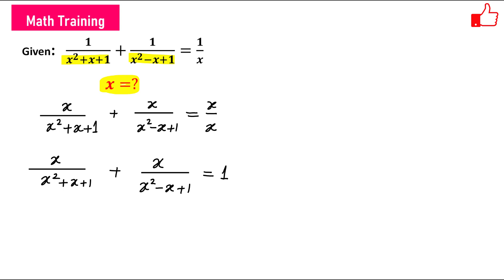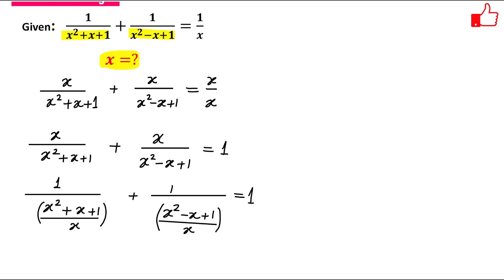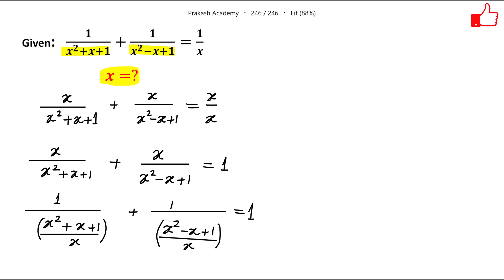Now we can divide numerator and denominator by x. So the numerator becomes 1, and the denominator becomes (x² + x + 1)/x. Similarly, the second term becomes 1/((x² - x + 1)/x), and this equals 1. Dividing by x: x²/x is x, x/x is 1, and 1/x is 1/x. So we get 1/(x + 1 + 1/x) plus 1/(x - 1 + 1/x) equals 1.